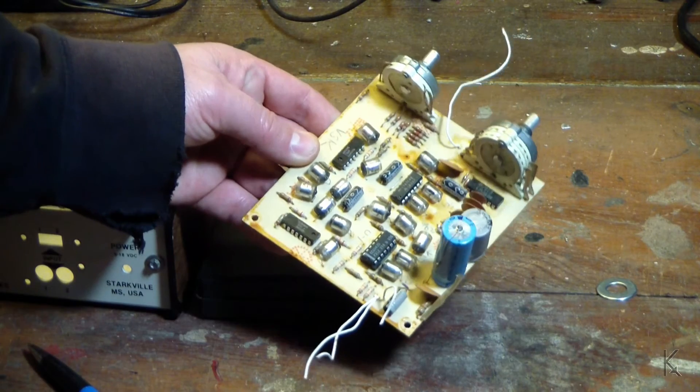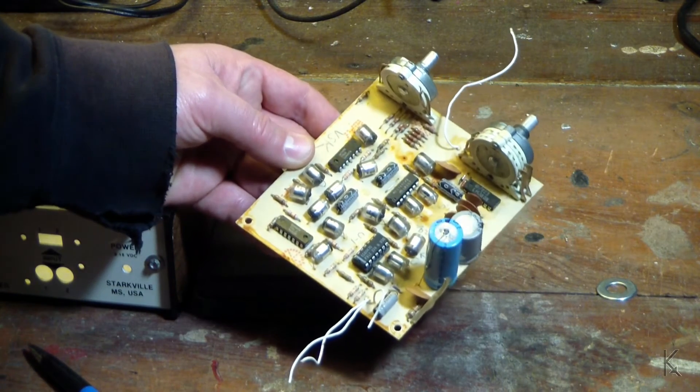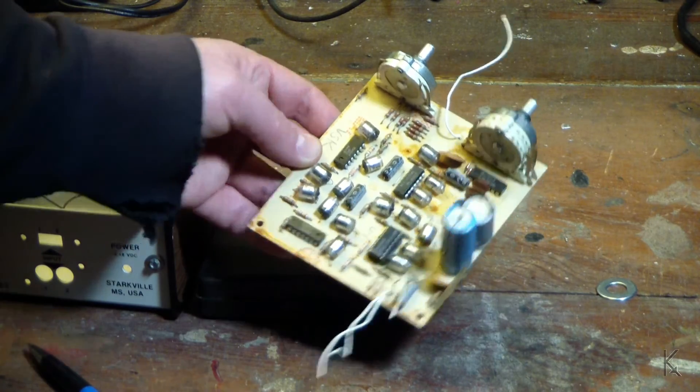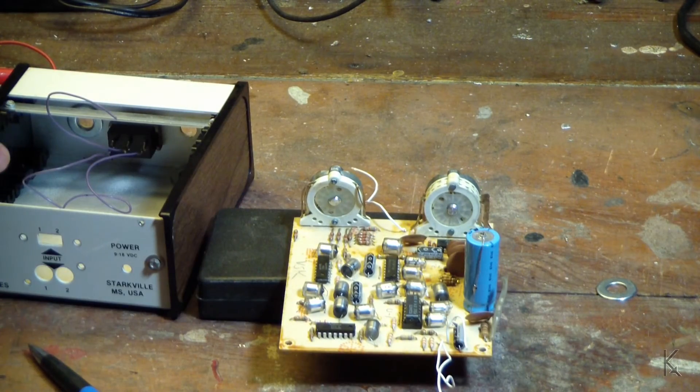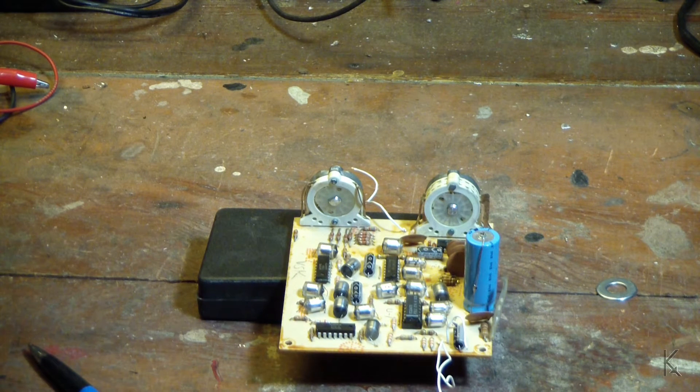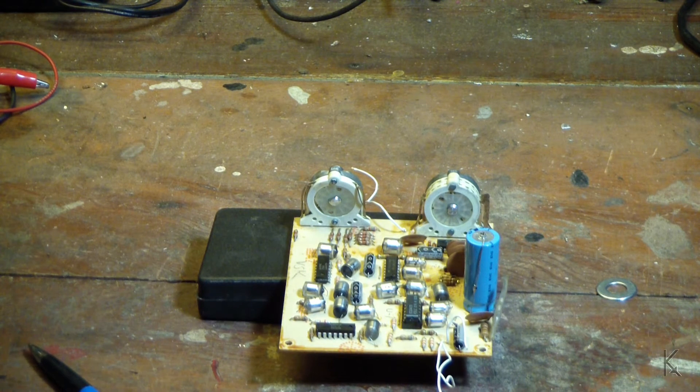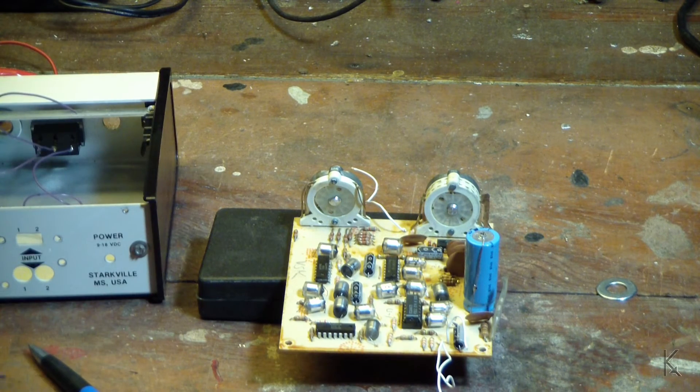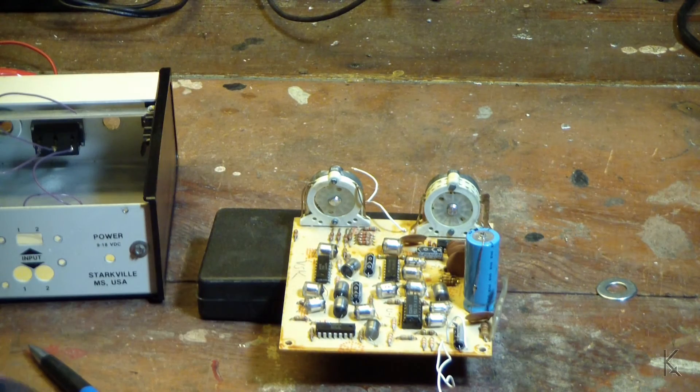So, not much to the board. Real simple. Just a bunch of op amps as audio filters. So, that's inside the MFJ. 1978 vintage MFJ 721 Super Selector. That's what they called it. The Super Selector. Audio bandpass filters.